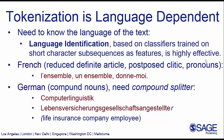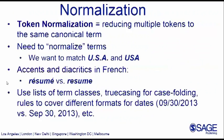Another important preprocessing step is normalization, which has to do with understanding what terms really mean the same thing. A simple example would be 'USA' spelled in different forms. In French, 'résumé' may be spelled with or without diacritics. There are different steps for processing text, such as case folding, figuring out different forms of the data, and so forth.